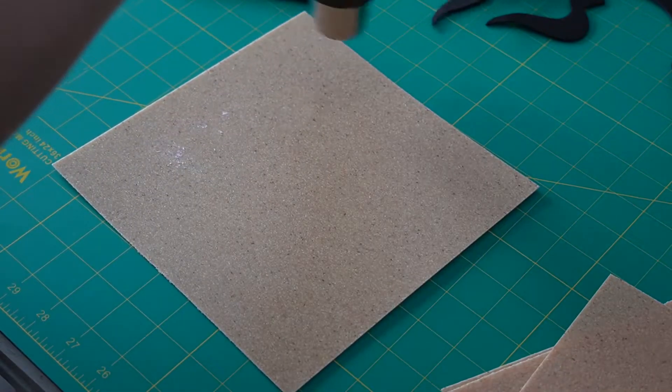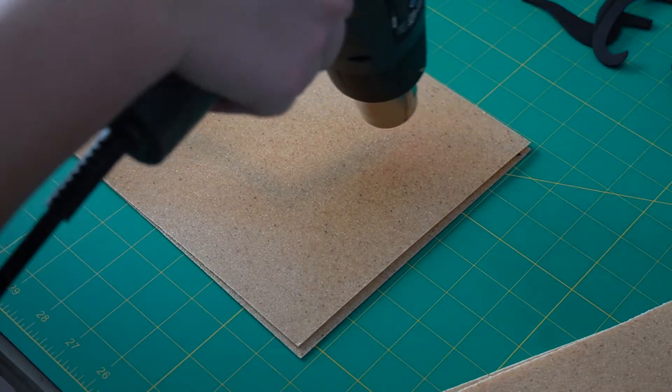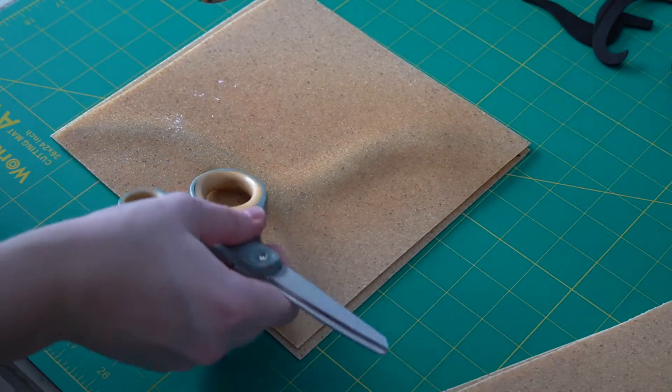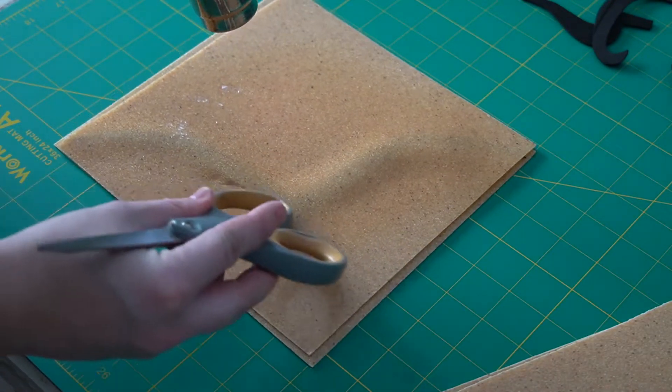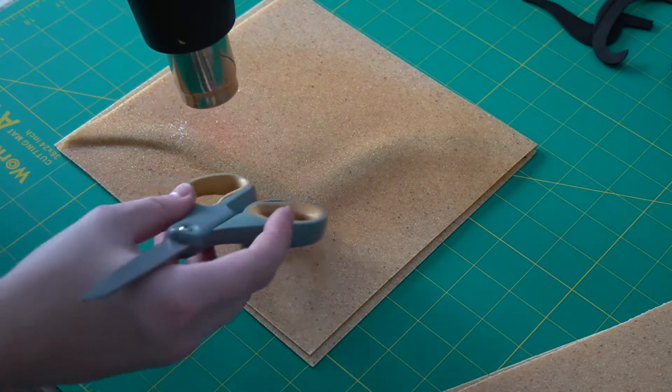Once the foam pieces were cut I sandwiched them between pieces of Worbla that had been heated up and I just basically squished all the Worbla together. Just make sure that you're very careful during this step if you're working with Worbla because it's very hot. You do have to use a heat gun when you use Worbla. You can't use something like a hair dryer because it's got to be a really hot heat so it'll burn your fingers.